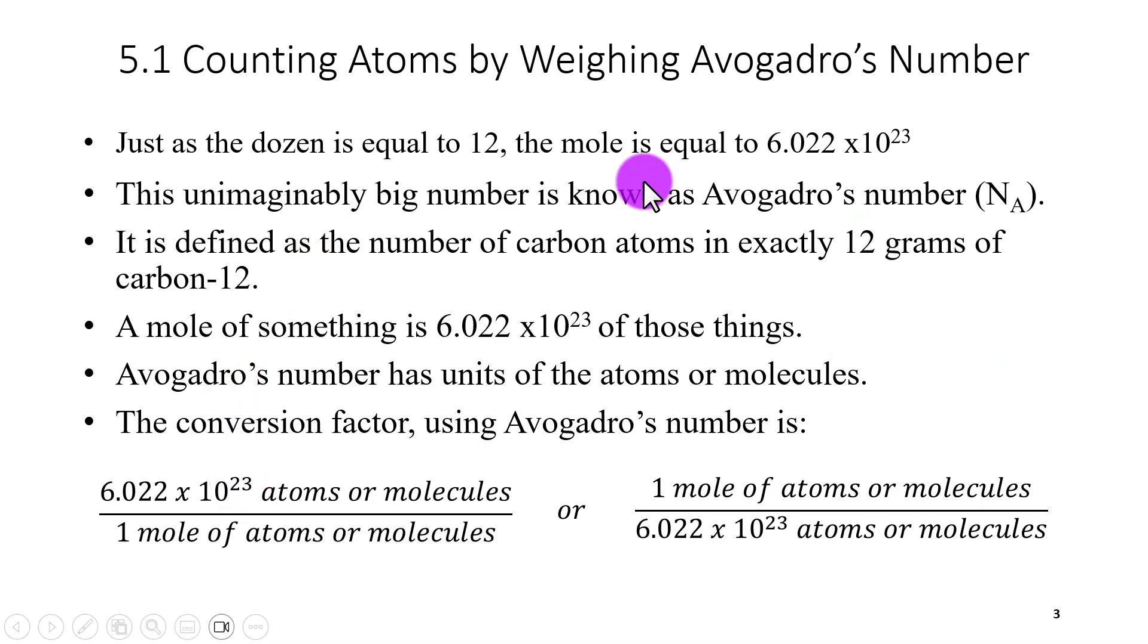Now when we use Avogadro's number to do calculations, we can use the conversion factor and express it in two different ways, as two fractions. 6.022 times 10 to the 23rd atoms or molecules over one mole of atoms or molecules. And this could be potassium atoms, sodium atoms, water molecules, carbon dioxide molecules, or whatever I'm talking about. It could be either atoms or molecules. Or we can flip that: one mole of atoms or molecules over 6.022 times 10 to the 23rd atoms or molecules.